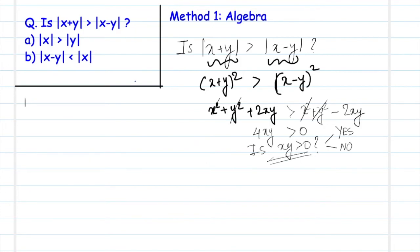Now let's take statement number B. We are given that x minus y is less than mod x. What does that mean? Again, we can square both sides because either of the sides is positive or at least non-negative. Right.